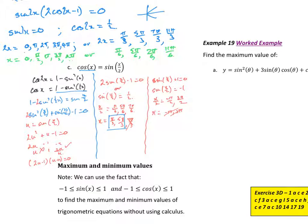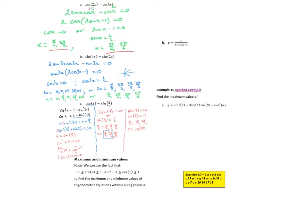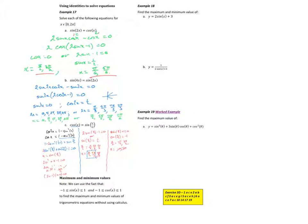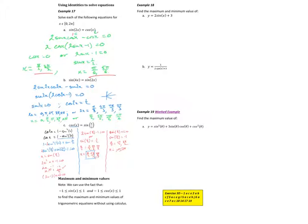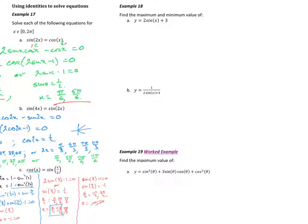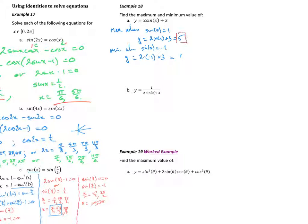For maximum and minimum values of trig functions, rather than calculus it's easier to recall that sin x and cos x are bounded between -1 and 1. For example, the maximum of y = 2sinx + 3 occurs when sinx = 1, giving y = 5. The minimum occurs when sinx = -1, giving y = 1.